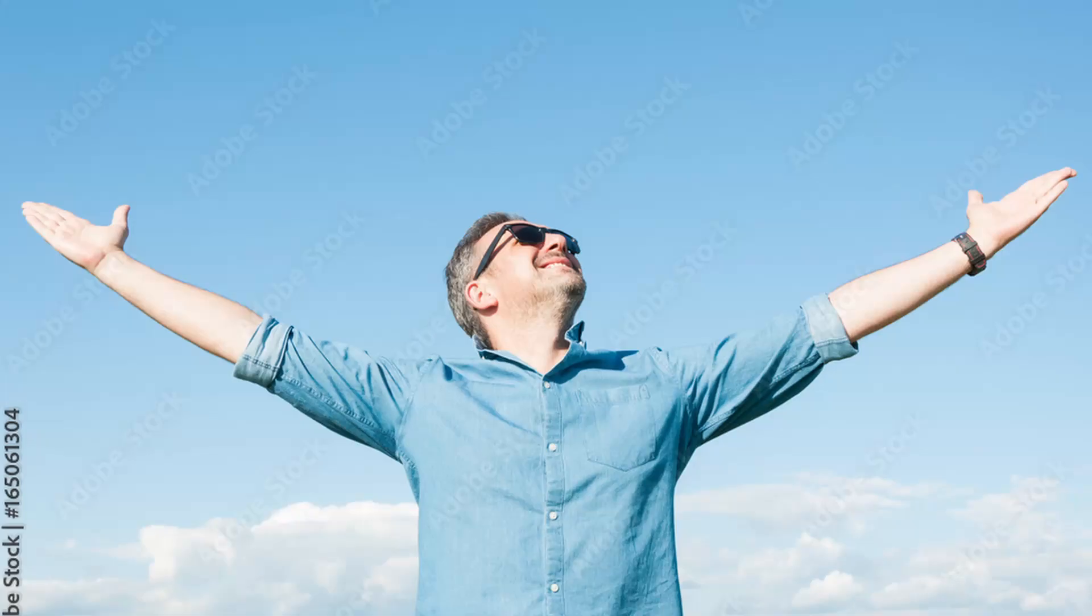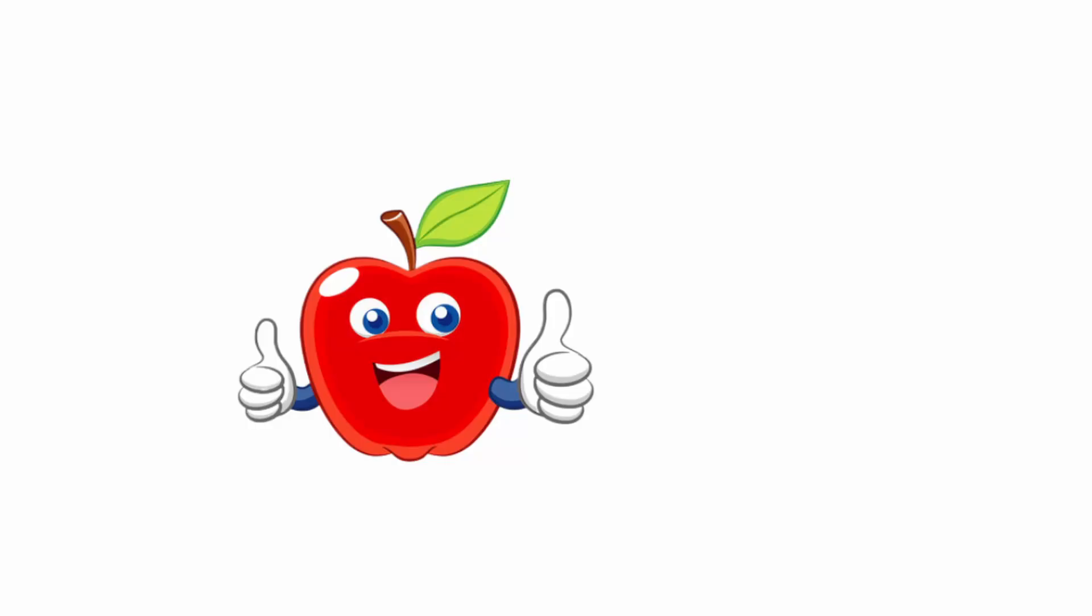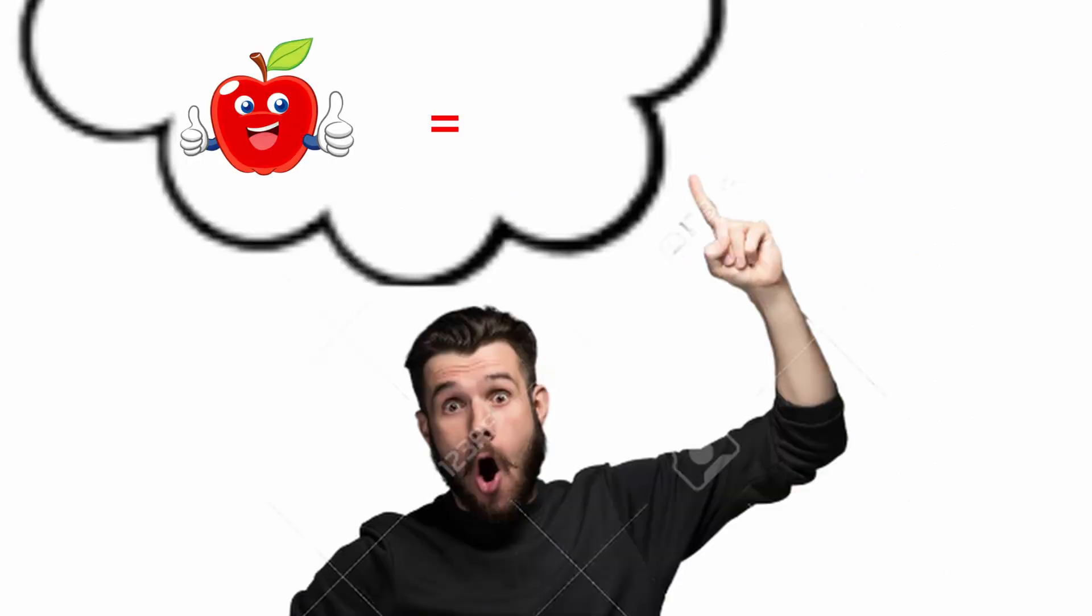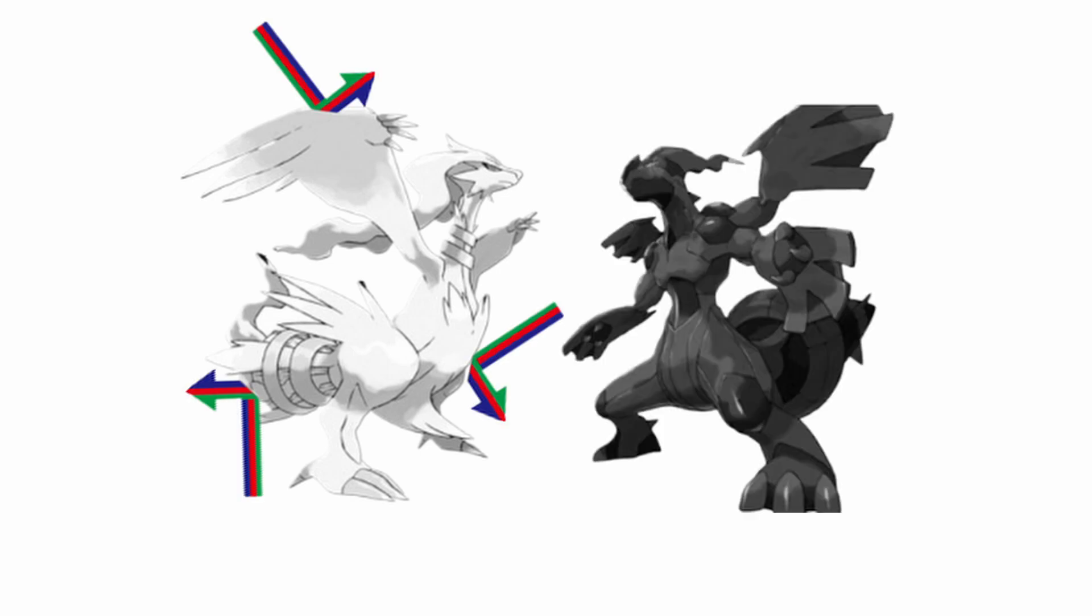Our perception of color is based on the wavelengths that an object reflects or absorbs. Consider an apple. It absorbs all colors of visible light except red, which is reflected back into our eyes. This reflection gives us the perception that an apple is red. And objects that appear white reflect all wavelengths of light, whilst those that appear black absorb all wavelengths.